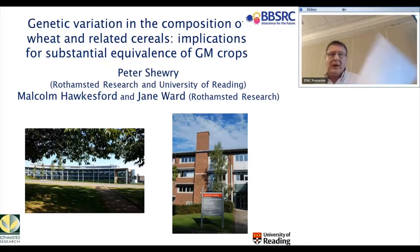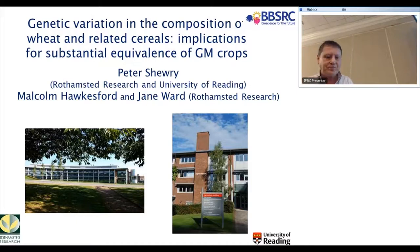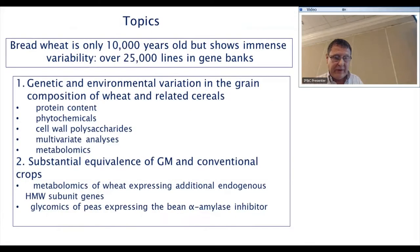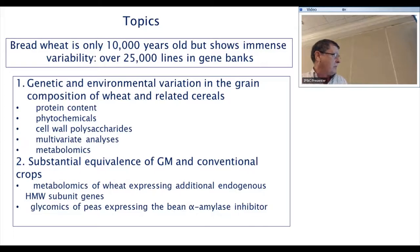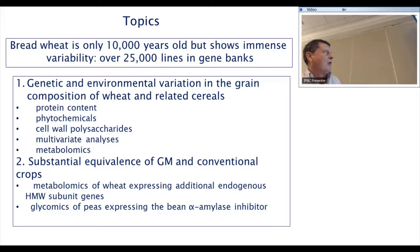I'd like to thank the organisers for inviting me. I'm one of a very small number from the European Union. I'm going to talk particularly about wheat and about wheat composition. Although wheat is a fairly new crop, it's immensely diverse — something like 25,000 lines in gene banks, and I was told last week there are 25,000 lines in China alone, so probably more like 50,000 nowadays. An immense degree of variation.